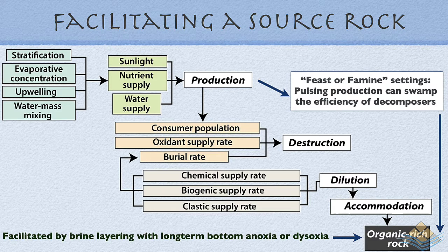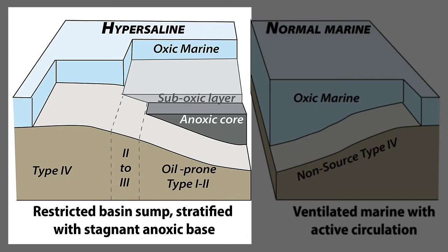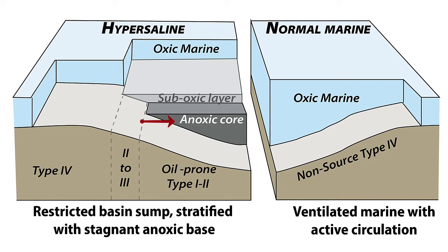If we look at the two general environments where in the marine realm we tend to form organic-enriched material: a restricted basin sump with stratified or stagnant anoxic base will tend to preserve the high levels of organic material descending as a rain from the upper oxic marine environment into that anoxic bottom. This is the typical scenario we see in many mesohaline settings as we pass from the marine into the non-marine, or from the non-marine into the marine-fed evaporite systems. Both scenarios give us anoxic, typically more saline bottom water that facilitates preservation of organic material produced in the upper parts of that water column.